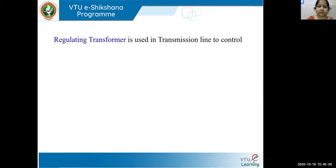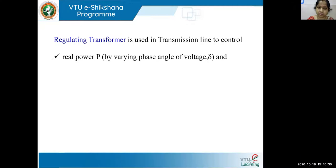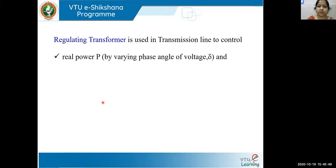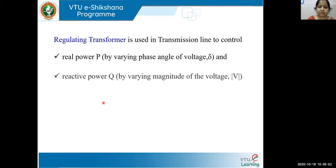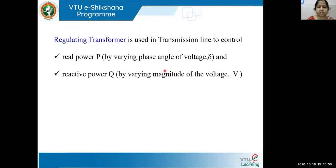A regulating transformer is used in transmission lines to control two things: first, real power, which is controlled by varying the phase angle of the voltage, assigned as delta. Second, reactive power, controlled by the magnitude of the voltage. In other terms, P and delta are tightly coupled, and Q and magnitude of V are tightly coupled. These are the main four parameters in load flow analysis — remember this, as the concept is used in the fast decoupled load flow method.